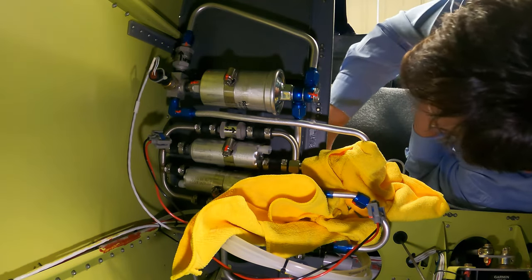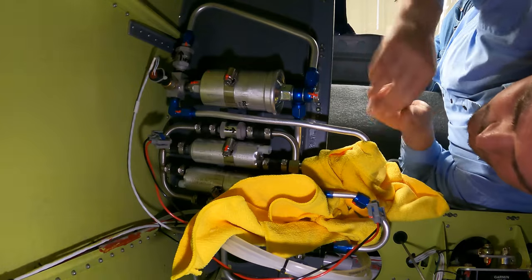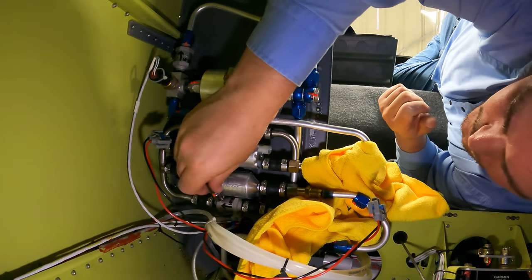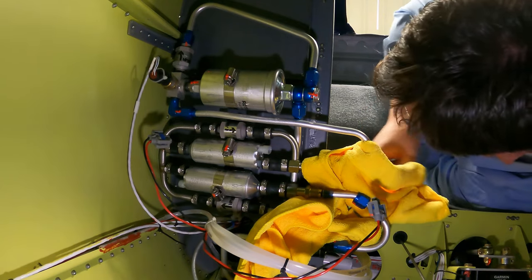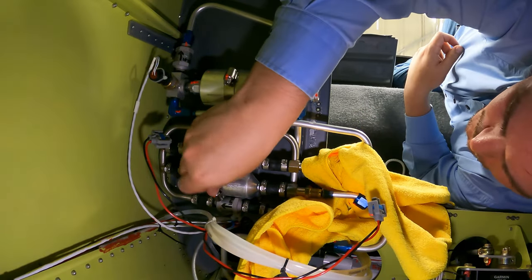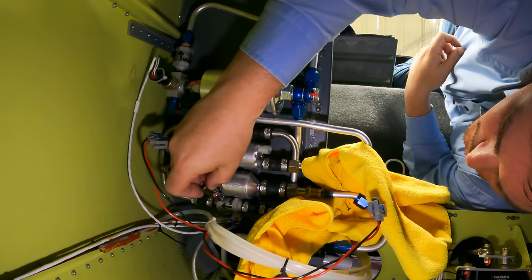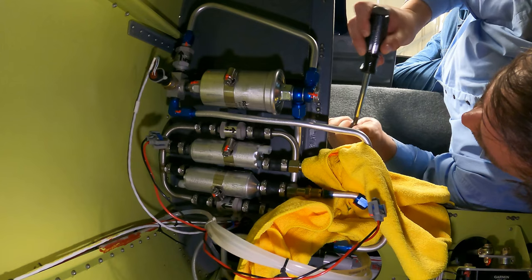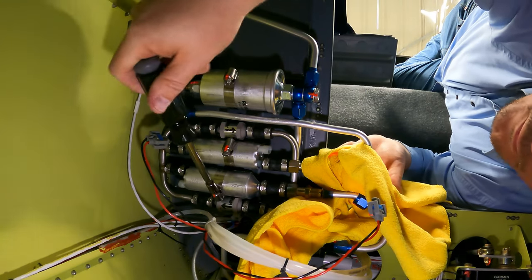Now don't forget that it is possible to remove the entire fuel pump assembly here which includes the pumps, the filter, everything, and you can do that by removing the four AN525 screws on the opposite side of this bulkhead, and this entire assembly comes out as one module.